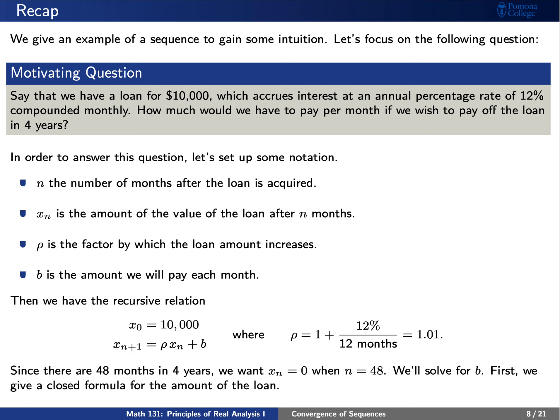From what's given in the problem, we have the following recursive relation. Initially, our loan amount is x zero, which is $10,000. The factor by which the loan amount increases, rho, is 1.01, because we have 12% APR over 12 months. The recursive relation is x_{n+1} = ρ·x_n + b. We want x sub n to be zero when n is 48, corresponding to four years, and we need to solve for b.